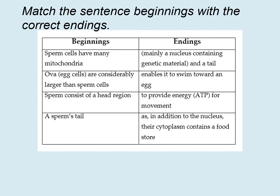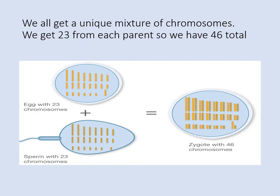You should now be able to match the beginnings with the endings. The answers are: sperm cells have many mitochondria to provide ATP for movement; ova egg cells are considerably larger than sperm cells as in addition to the nucleus their cytoplasm contains a food store; sperm consist of a head region which is mainly a nucleus containing genetic material and a tail; and a sperm's tail enables it to swim towards the egg. Each human has 46 chromosomes — 23 from each parent — which provides a unique set of chromosomes and unique DNA.